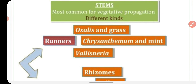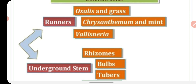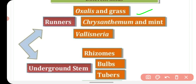In stems, the most common form of vegetative propagation occurs. Many stems produce new plants. Some stems produce horizontal stems called runners, such as in oxalis and grasses. These horizontal stems spread along the ground and produce new plants at intervals.